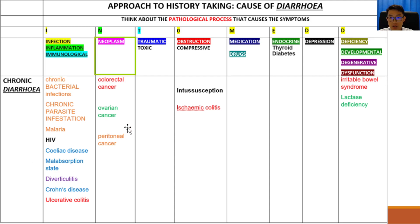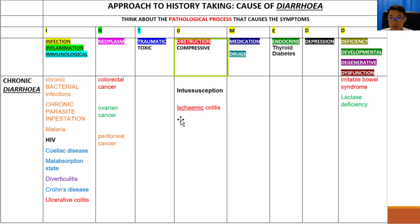Next we have neoplastic causes — colorectal cancer, ovarian cancer, and peritoneal cancer can all cause chronic diarrhea. Obstructive causes such as intussusception and ischemic colitis, which is an obstructive process within the arteries supplying the bowel, can also cause chronic diarrhea.